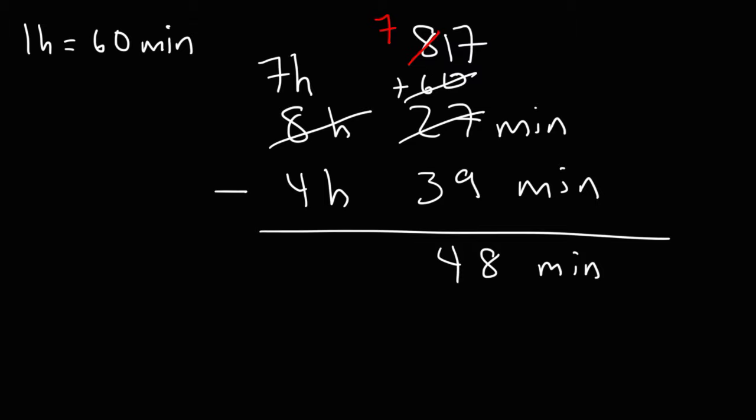And now all we need to do is subtract 7 hours by 4 hours. And that is going to give us 3 hours. So this is our answer right here, 3 hours and 48 minutes. So now you know how to add and subtract time in units of hours and minutes.